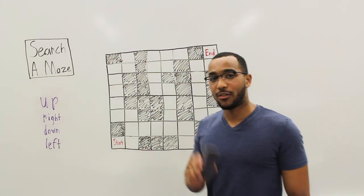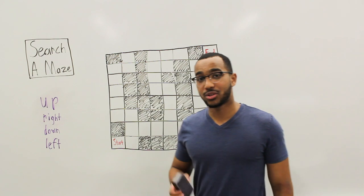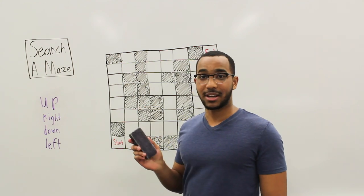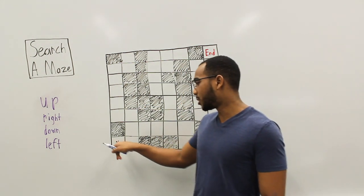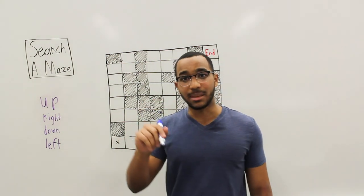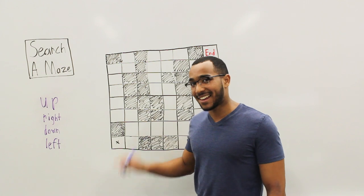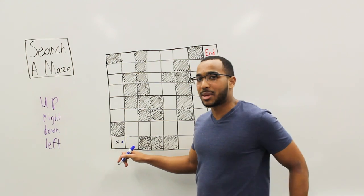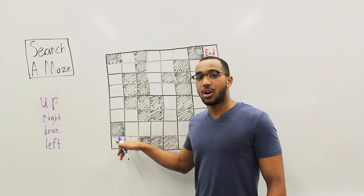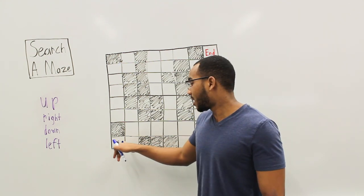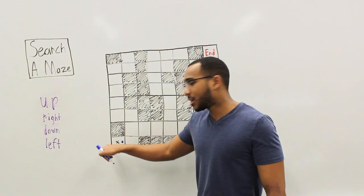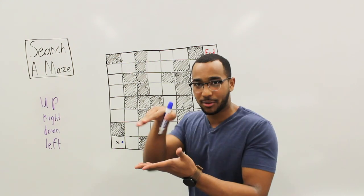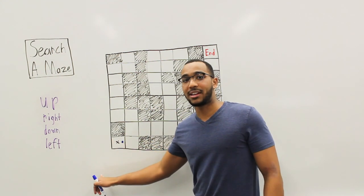We kick off our search starting at the start cell, mark it as traversed, and ask: can I go up? No. Can I go right? Yes — let's go right. That blue dot indicates we're going depth-first, deep into this search. If going right doesn't work out, we'll come back and try down, then left. But right now we're going depth-first to the right. We move to that cell, mark it as traversed, and then check up, right, down, left.